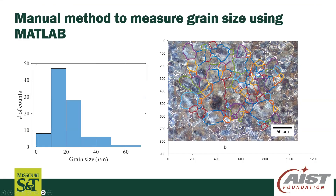In summary, we took a steel microstructure, manually measured approximately 100 grains using MATLAB, and built a histogram of the grain size distribution. According to the log-normal distribution, the average grain size is approximately 20 microns. Remember this is an alternative method, not a standard one — if you need a standard approach, use the ASTM standard, which teaches you how to properly measure average grain size. You can find the code link in the description, and let me know if you have any questions. Thank you.